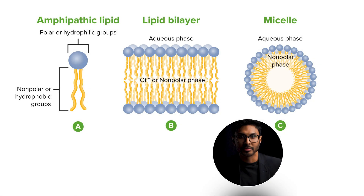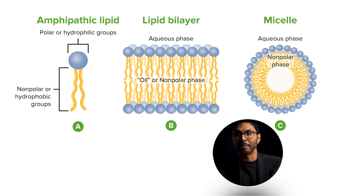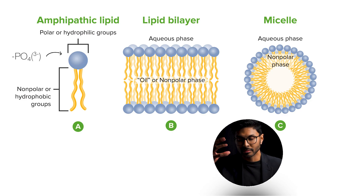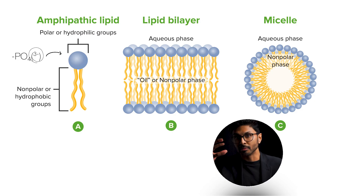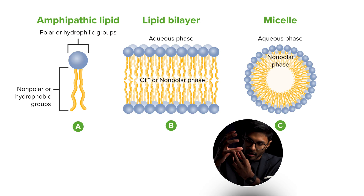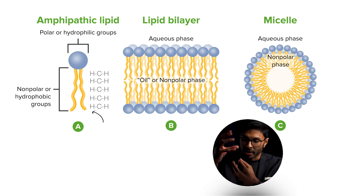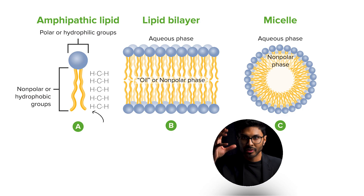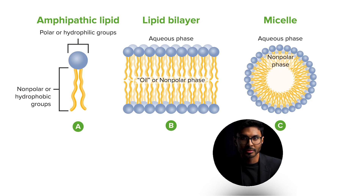A classic example of an amphipathic molecule is a phospholipid, which is essential for forming cell membranes and bilayers. Phospholipids are amphipathic because their structure includes both a hydrophilic head and hydrophobic tails. The hydrophilic head contains a phosphate group (PO4 3−), which is negatively charged, making it polar and capable of interacting with water via hydrogen bonding and charge-to-charge interactions. The hydrophobic tails are made up of long hydrocarbon chains — carbon and hydrogen atoms — which are non-polar and hydrophobic and prefer to avoid water.